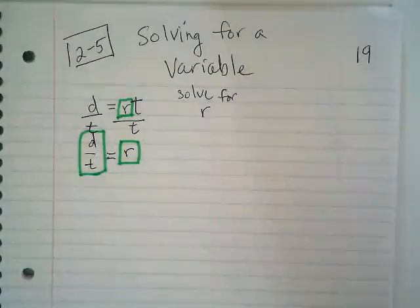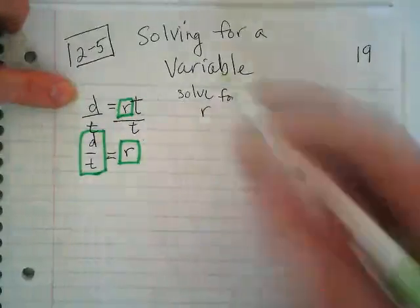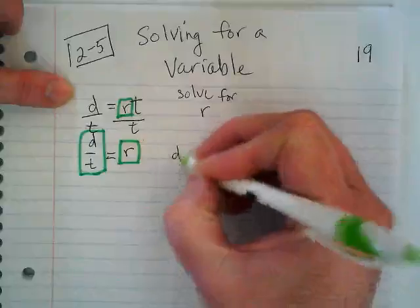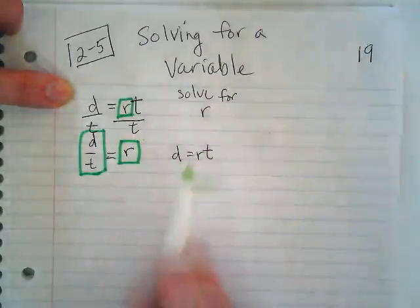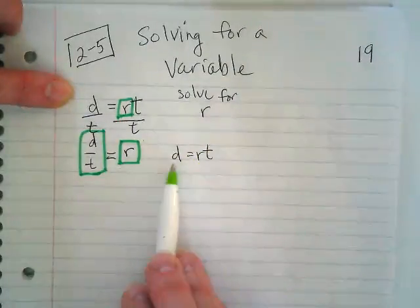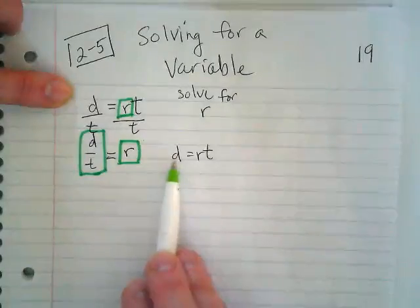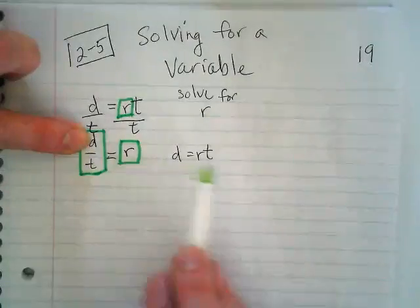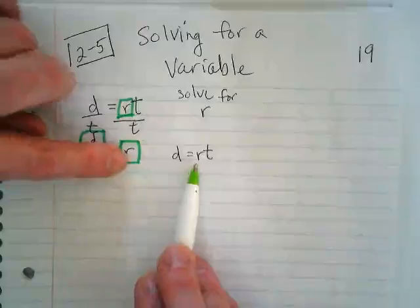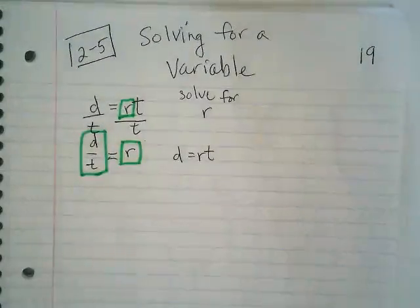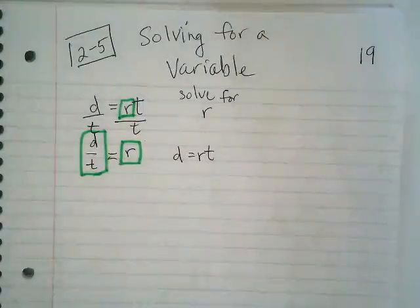And it makes sense because up here, when it was D equals RT, these two multiplied made this. So this divided by this is going to make that. They're inverse operations. Do you guys see that? Okay.